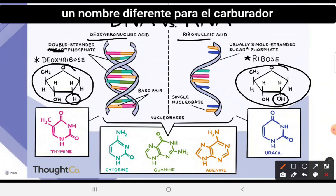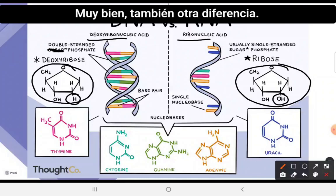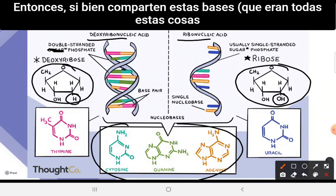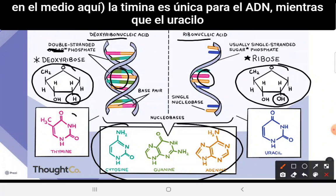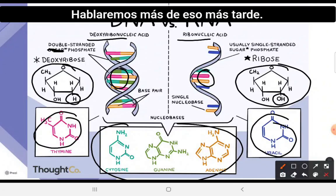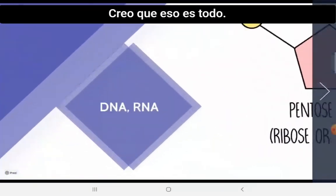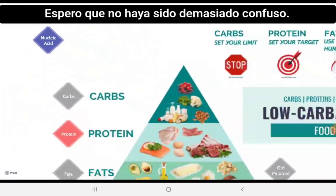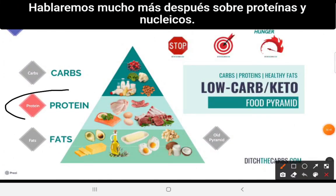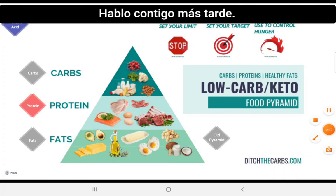DNA is long-term information passed down from generation to generation, while RNA is used during your lifetime as a small copy of DNA. DNA is double-stranded; RNA is single-stranded. They also have different sugars — the carbohydrate differs at the two-prime carbon. Thymine is unique to DNA, while uracil is unique to RNA. We'll talk more about proteins and nucleic acids later.